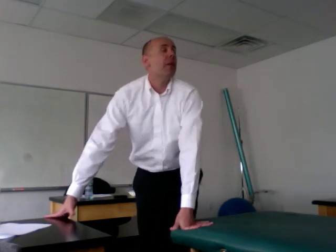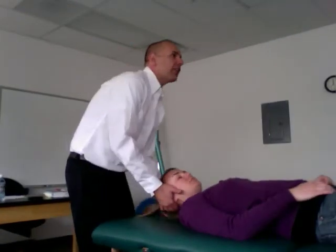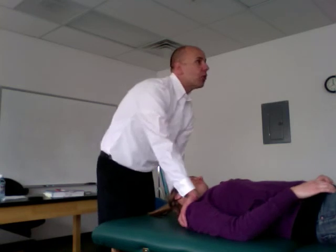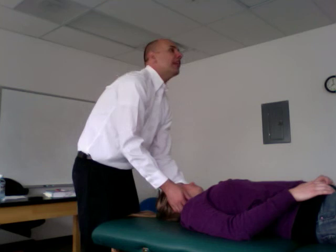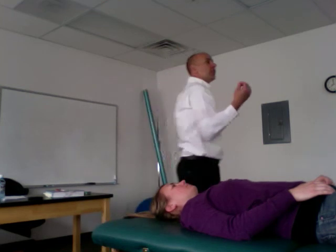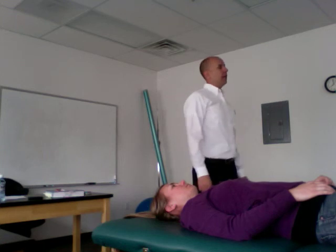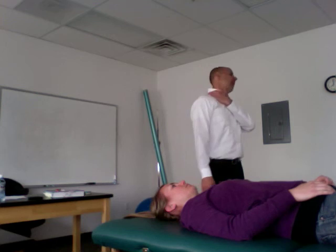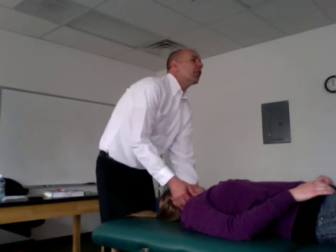The shoulder depressor test is performed with the patient lying down. For the left side, you laterally flex the head to the right with your left hand, then push that shoulder down and toward the feet. If there are nerve root adhesions, you're putting traction on those nerve roots, which will be positive for pain. A positive finding is pain in the neck, and sometimes radiating pain down the arm, indicating nerve root adhesions.